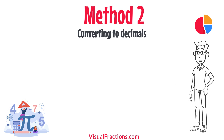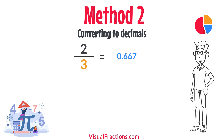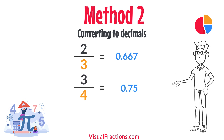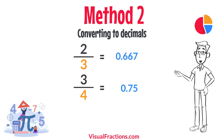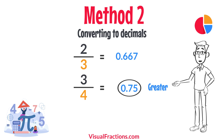For a second method, let's convert each fraction to a decimal. Using a calculator, divide 2 by 3 to get approximately 0.667, and divide 3 by 4 to get 0.75. This calculation shows that 0.75 is greater than 0.667, confirming that 3 quarters is indeed greater than 2 thirds.